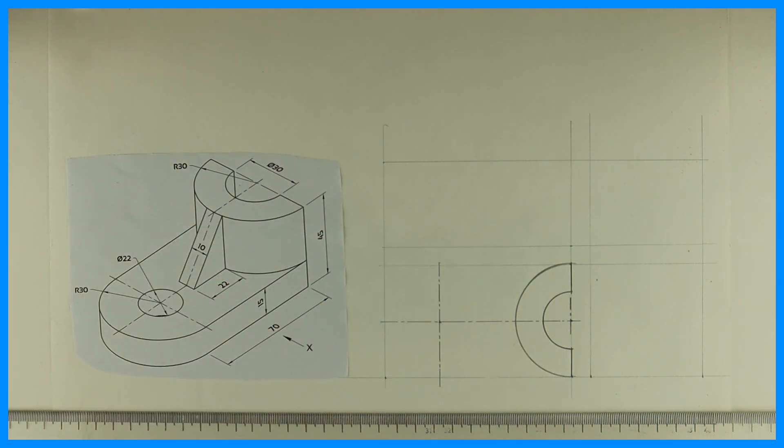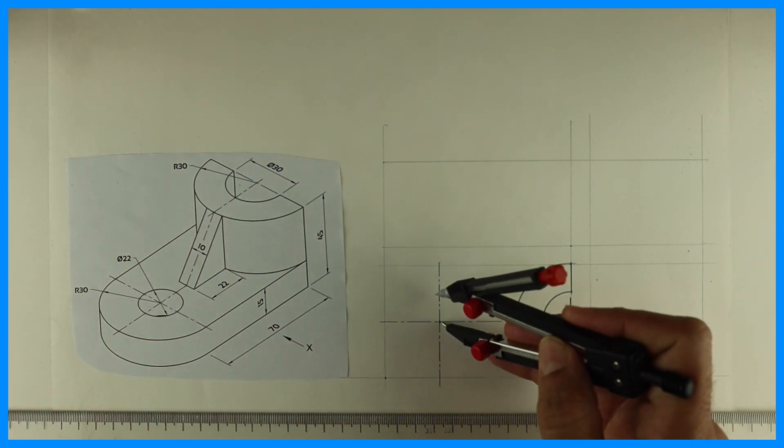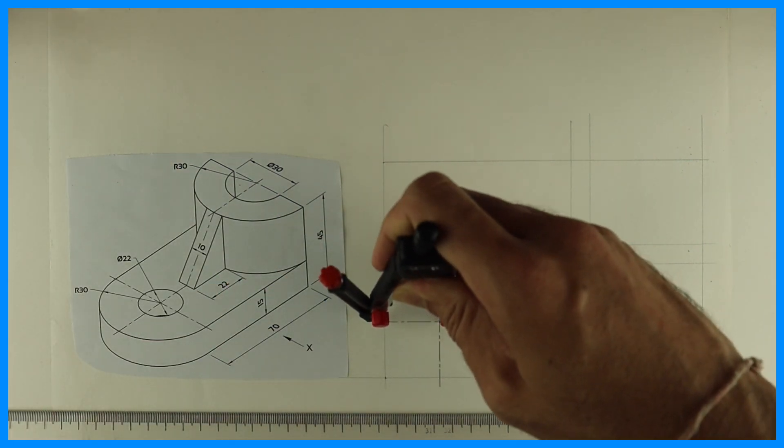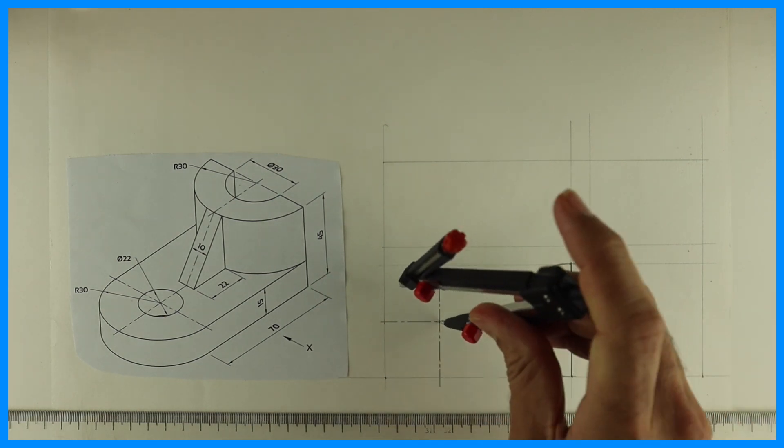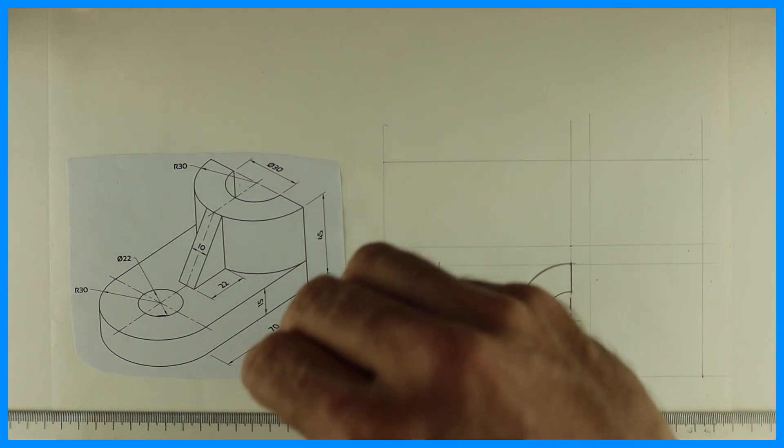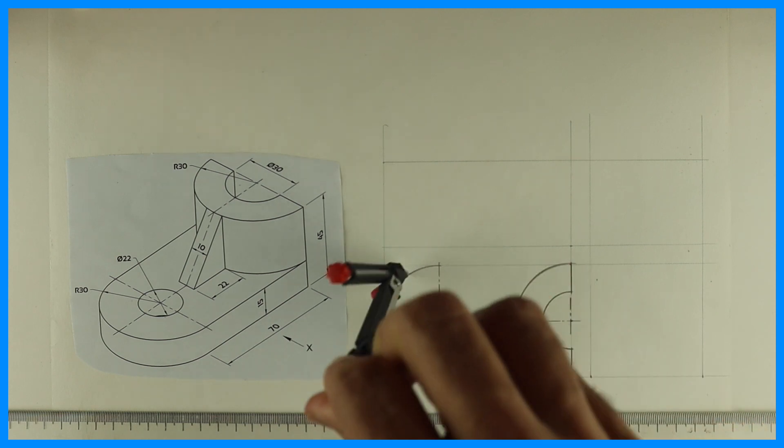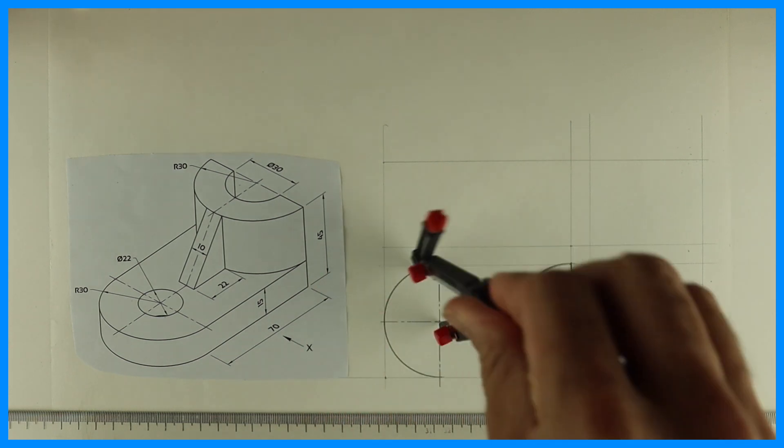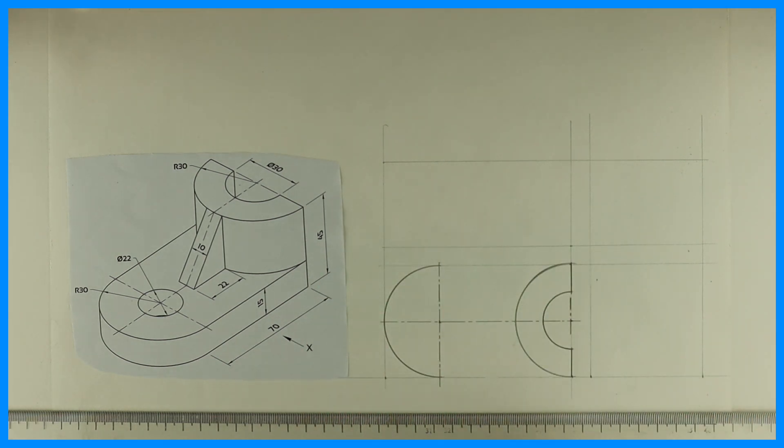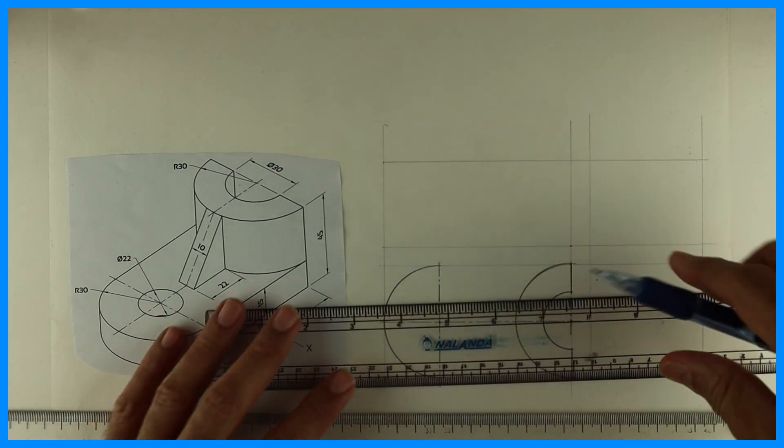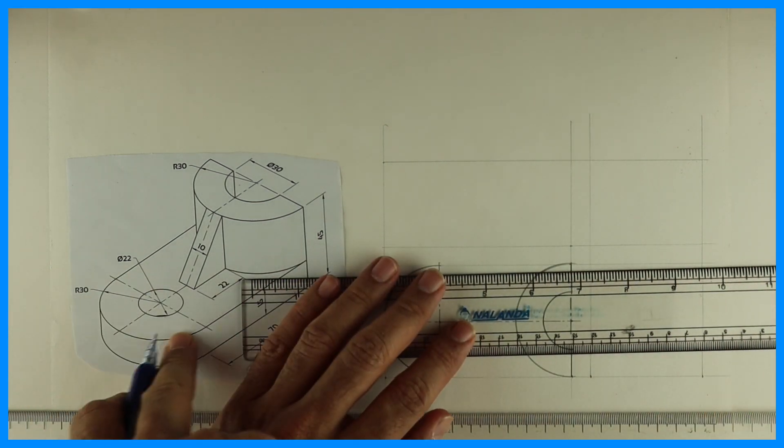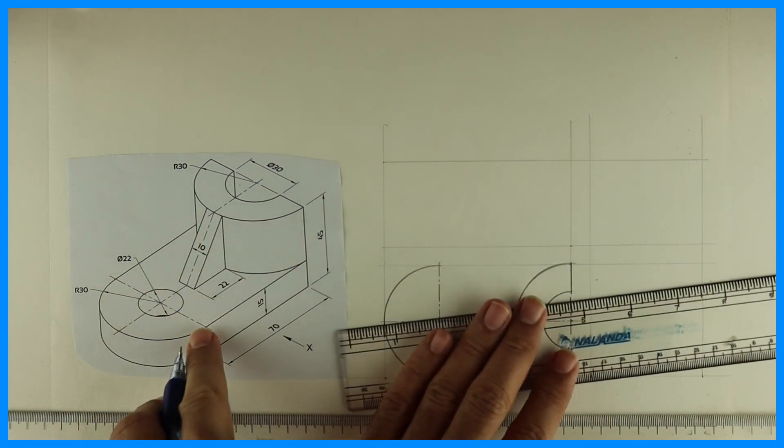Draw axis line and you can draw radius 30. Then we'll join this line.